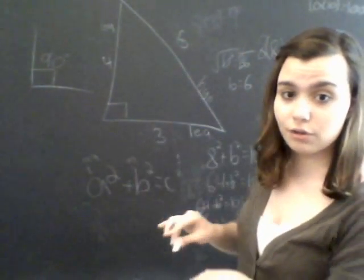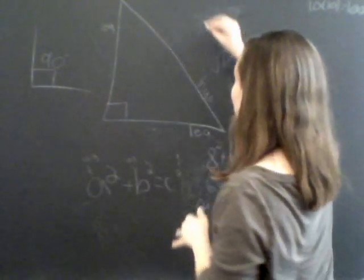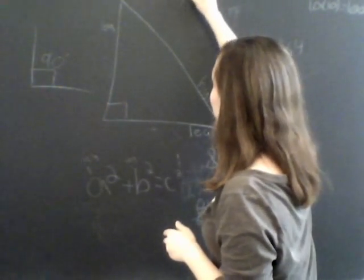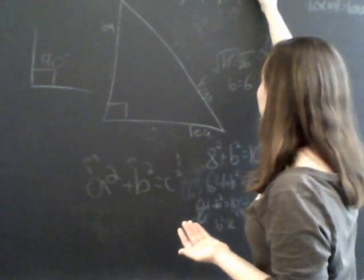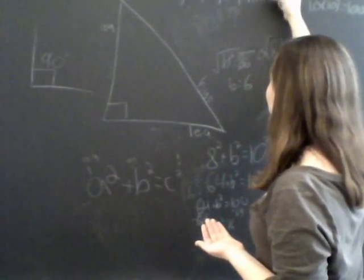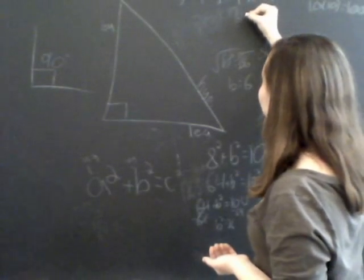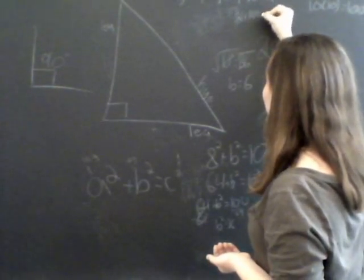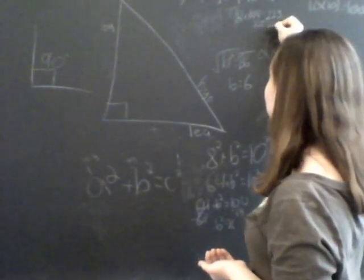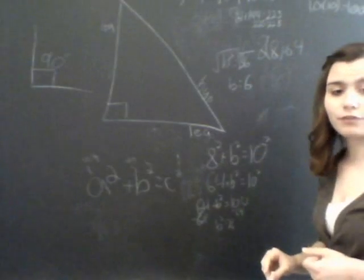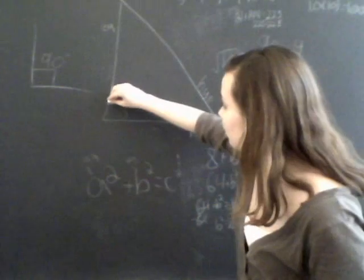For example, 3 to 4 to 5 equals 9 to 12 to 15. And if you put that into the Pythagorean theorem, it'll be 81 plus 144 equals 225. And that'll end up with 225 equals 225. So that's just another trick for finding the lengths of right triangles, which, remember, are triangles with an angle of 90 degrees.